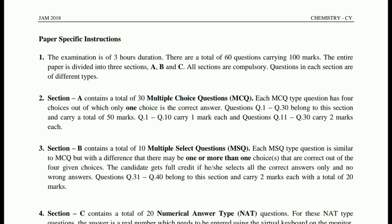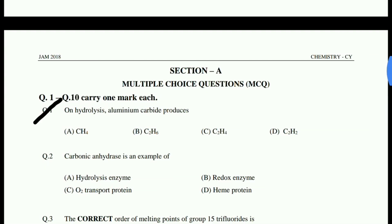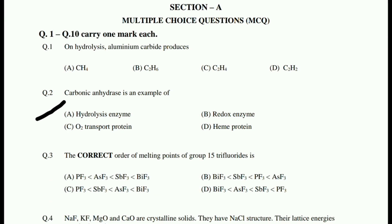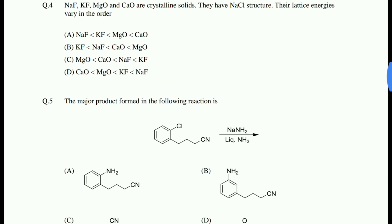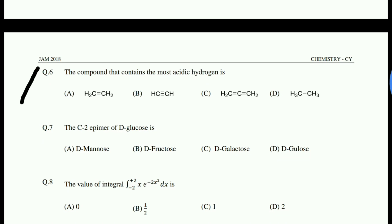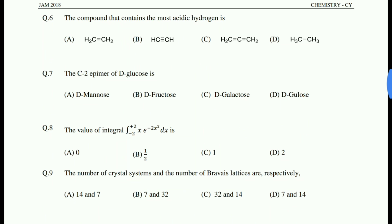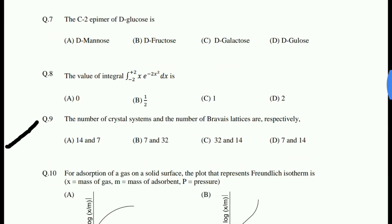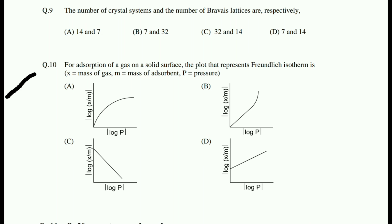The first question is from inorganic chemistry — A and P block elements. The second question is from bio-inorganic chemistry. The third question is from P block chemistry and the fourth question from chemical bonding. The fifth question is from organic chemistry — basic organic reactions. The sixth question from basic organic chemistry, and the seventh question from carbohydrates. Question 8 is from physical chemistry — basic mathematical concepts. Question 9 from solid state chemistry, and question 10 from adsorption — both from physical chemistry.